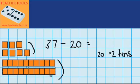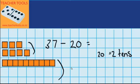So there's 1 tens gone and there's 2 tens gone. So you can see we're left with 1 tens and these 7 ones. So 1 tens plus 7 is 17.